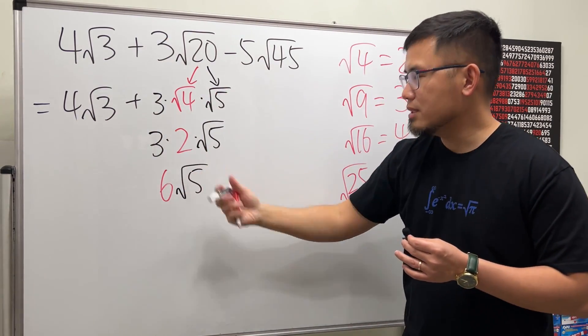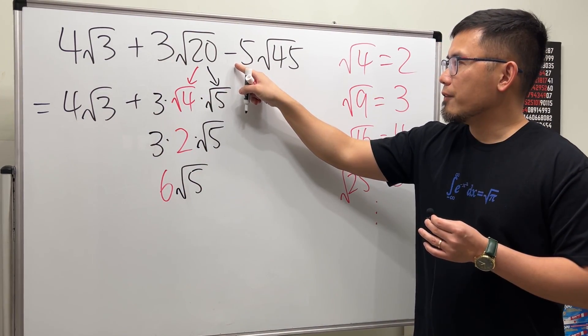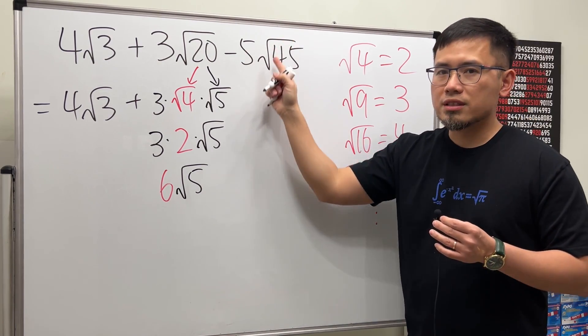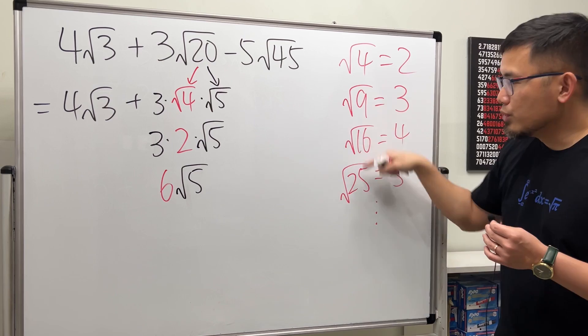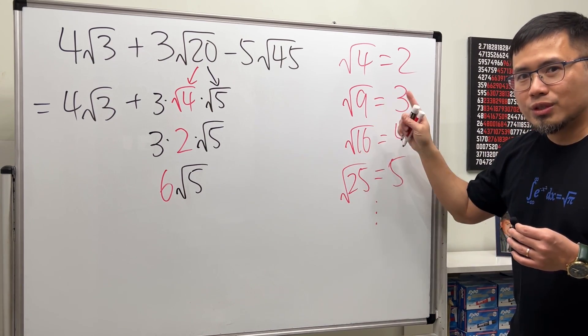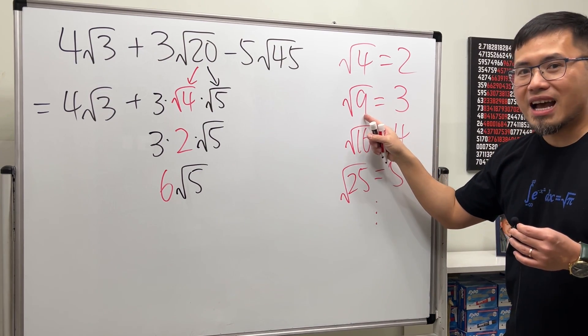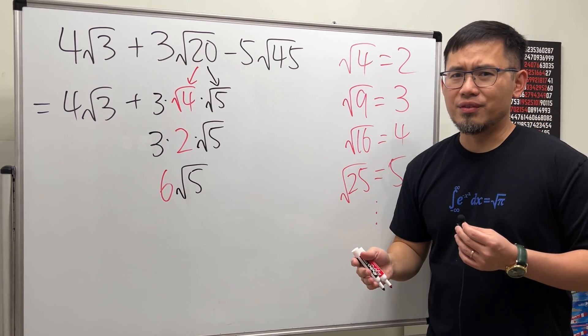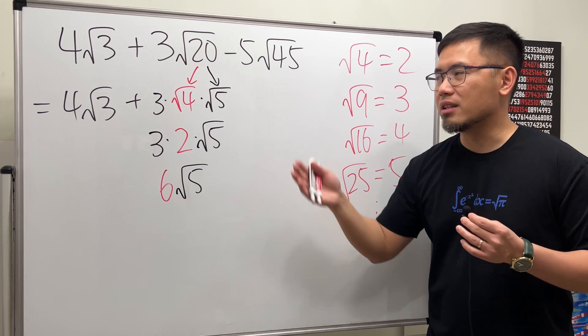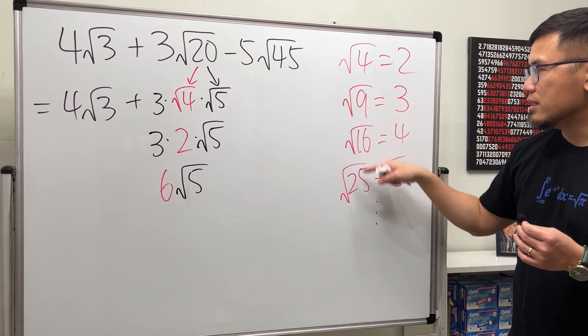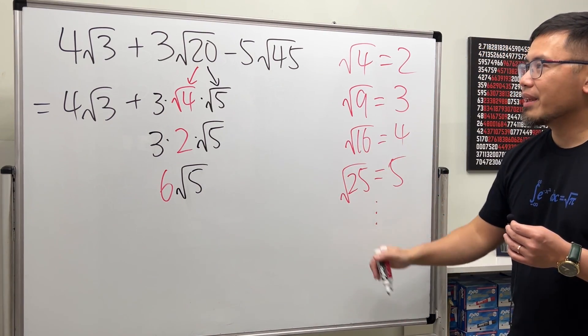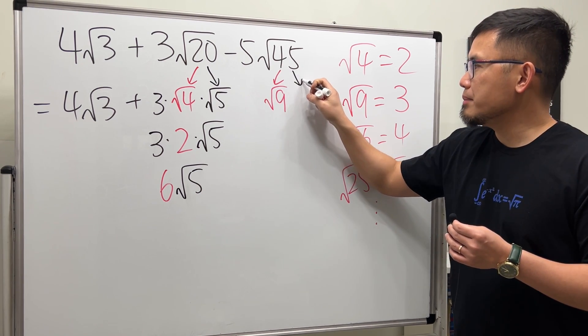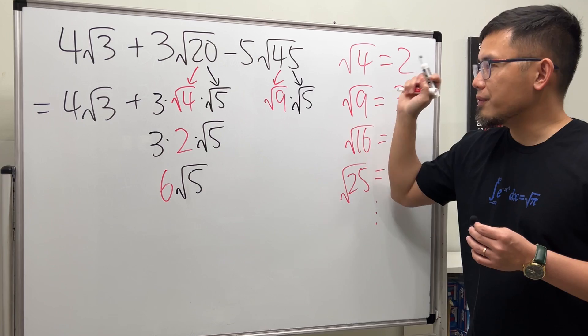And then for minus 5√45, how can we break down √45? Use these numbers. Which number can we use? The answer is 9. 9 times 5 is equal to 45. Do not use 3 times 15, even though 3 times 15 is 45, but 3 is not here, 15 is not here. So break down 45 as √9 times √5.